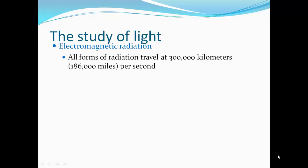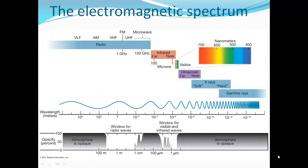All forms of radiation travel 300,000 kilometers per second, or 186,000 miles per second. It's known as the speed of light.